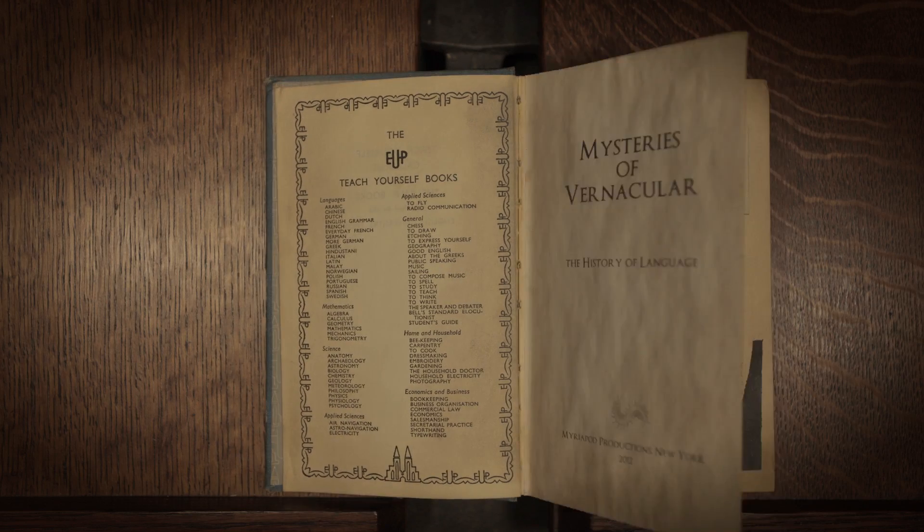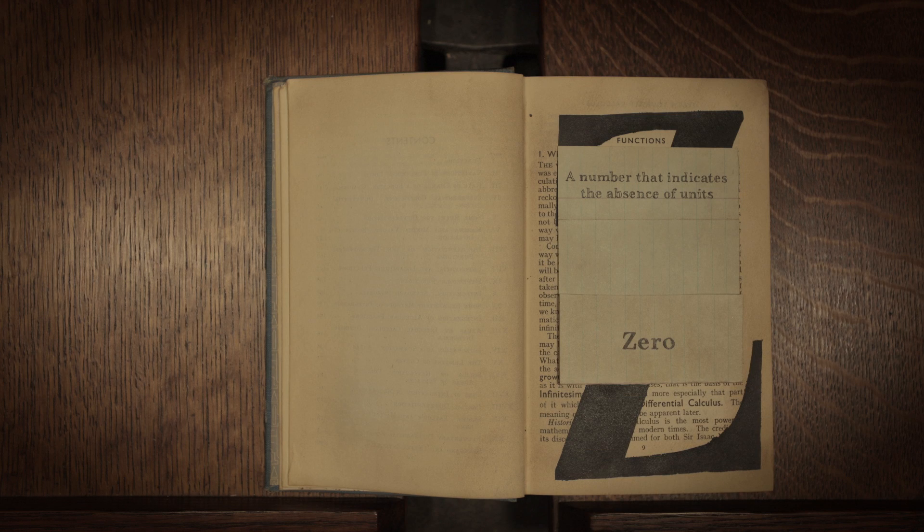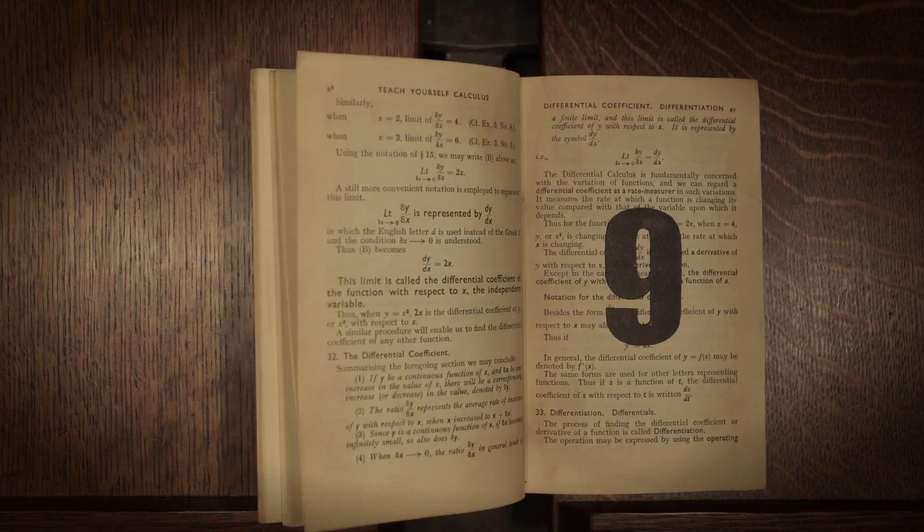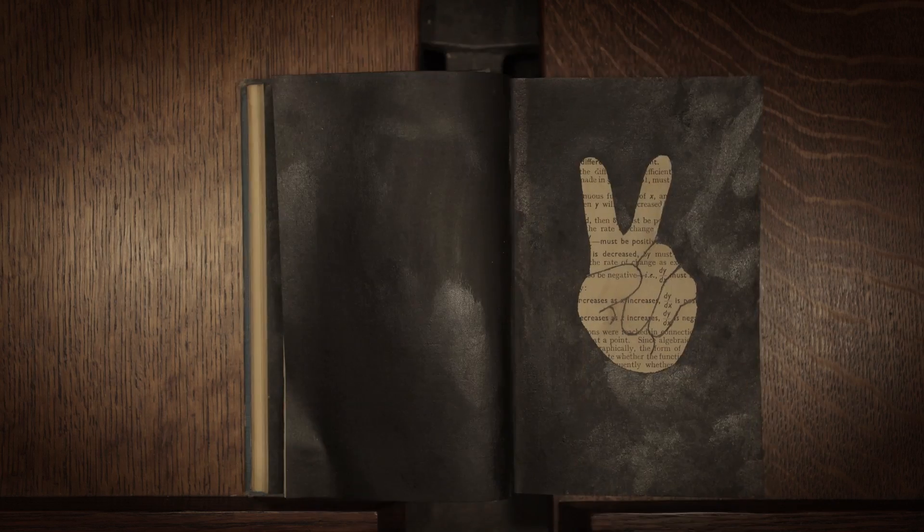Mysteries of Vernacular: Zero, a number that indicates an absence of units. In order to understand the genesis of the word zero, we must begin with the very origins of counting.